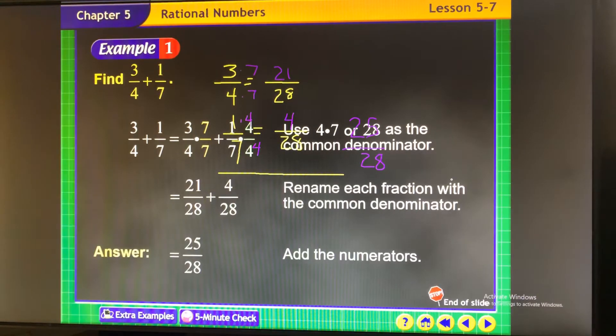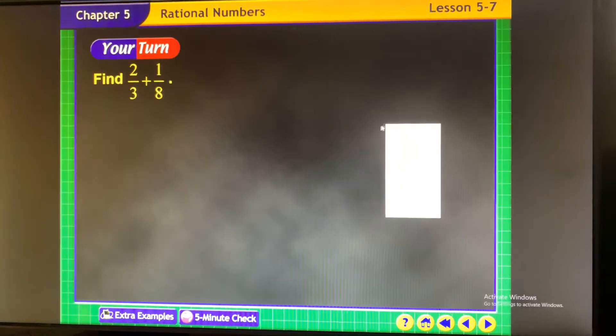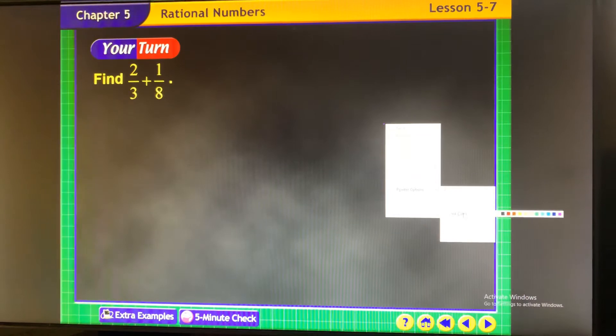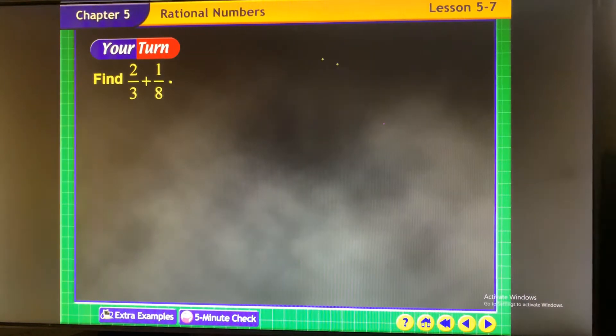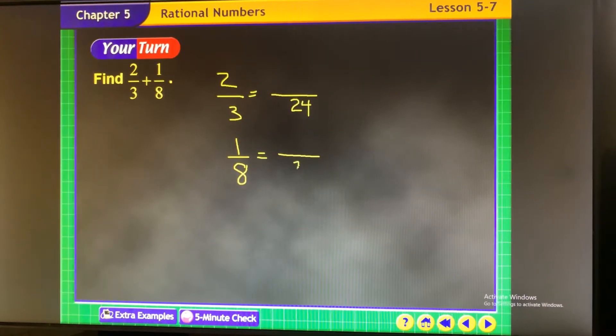They like doing it horizontally. I like doing it vertically. It's entirely up to your preference of what works best for you. So 2 thirds, 1 eighth. If you don't know the common denominator, do cake. If you do know it's 24, then you say 8 times what gave me that, multiply the top by that number.